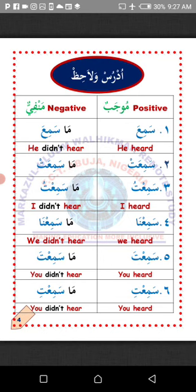Now: Muthbatun — Positive. This simply means a word in Arabic that shows that something has happened. Manfiyun — Negative. A word or combination of words in Arabic that shows something has not happened. For instance: Sami'a means 'he has heard,' but Ma sami'a means 'he didn't hear.' Number two: Sami'at — she has heard. Ma sami'at — she didn't hear.